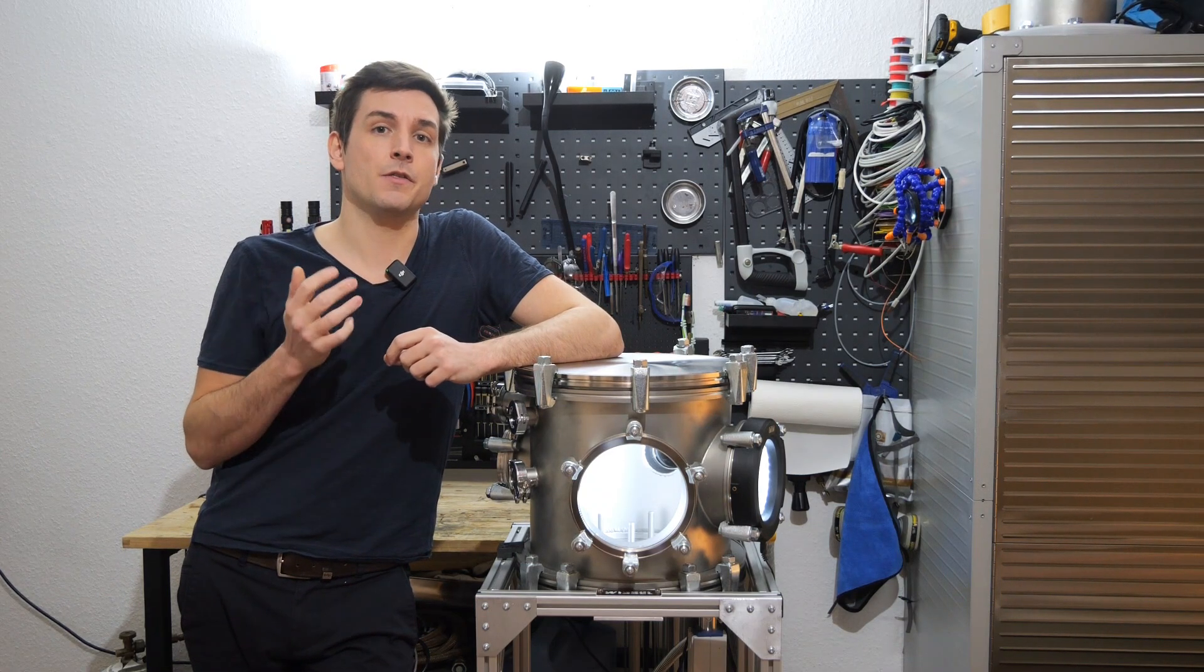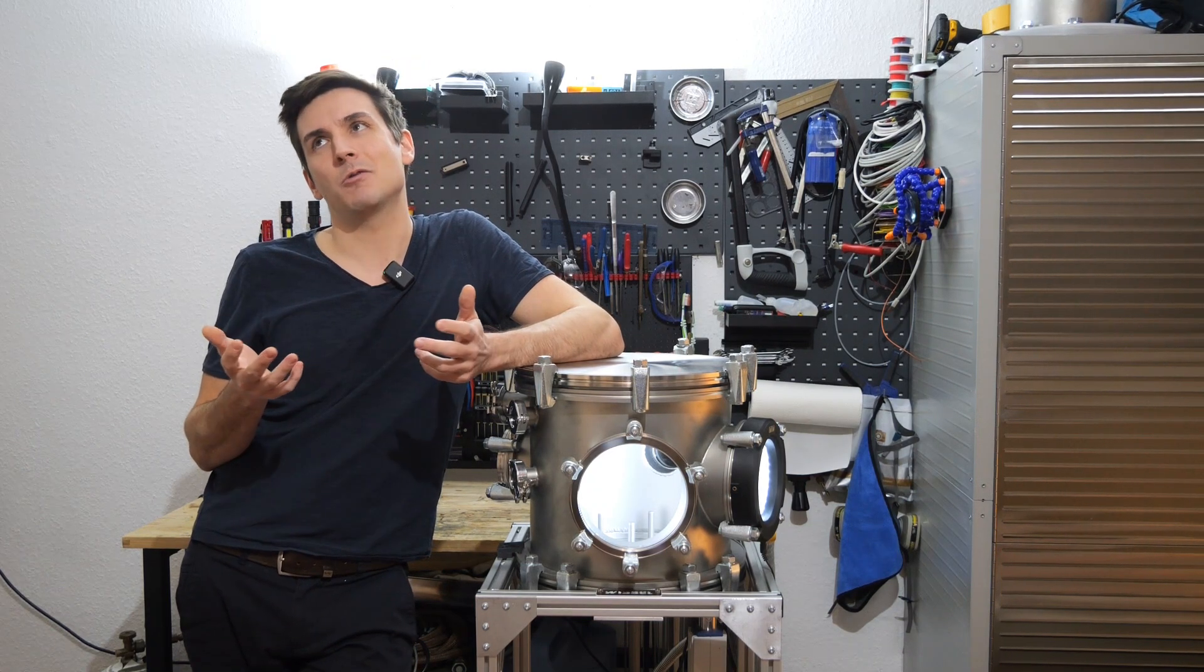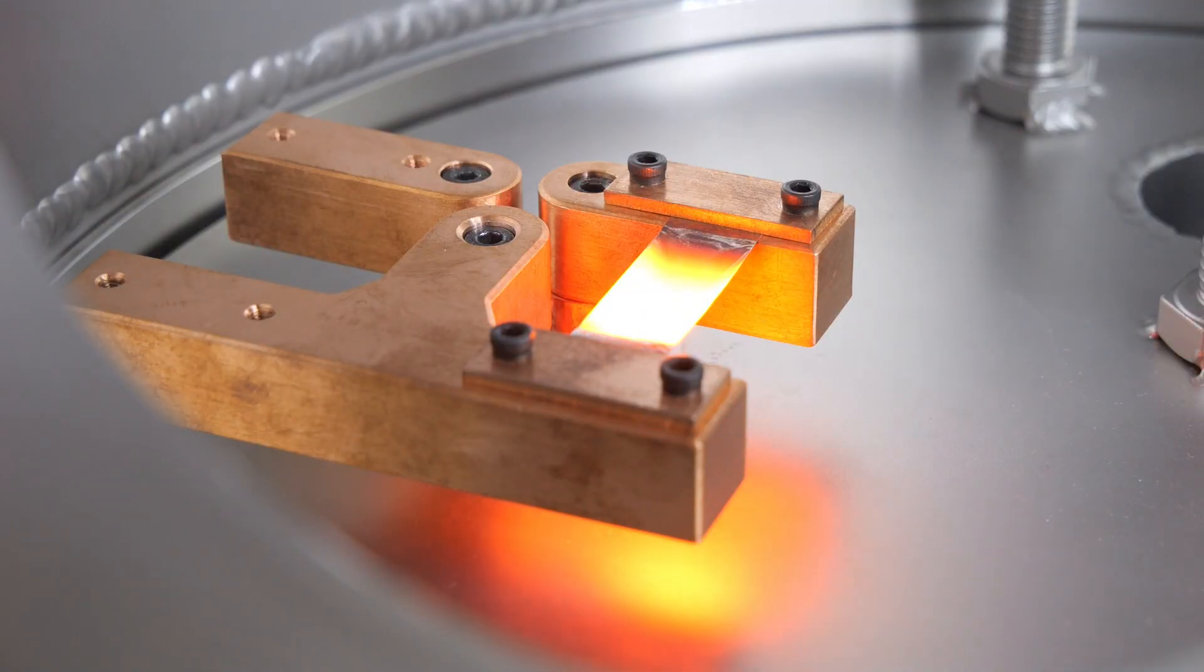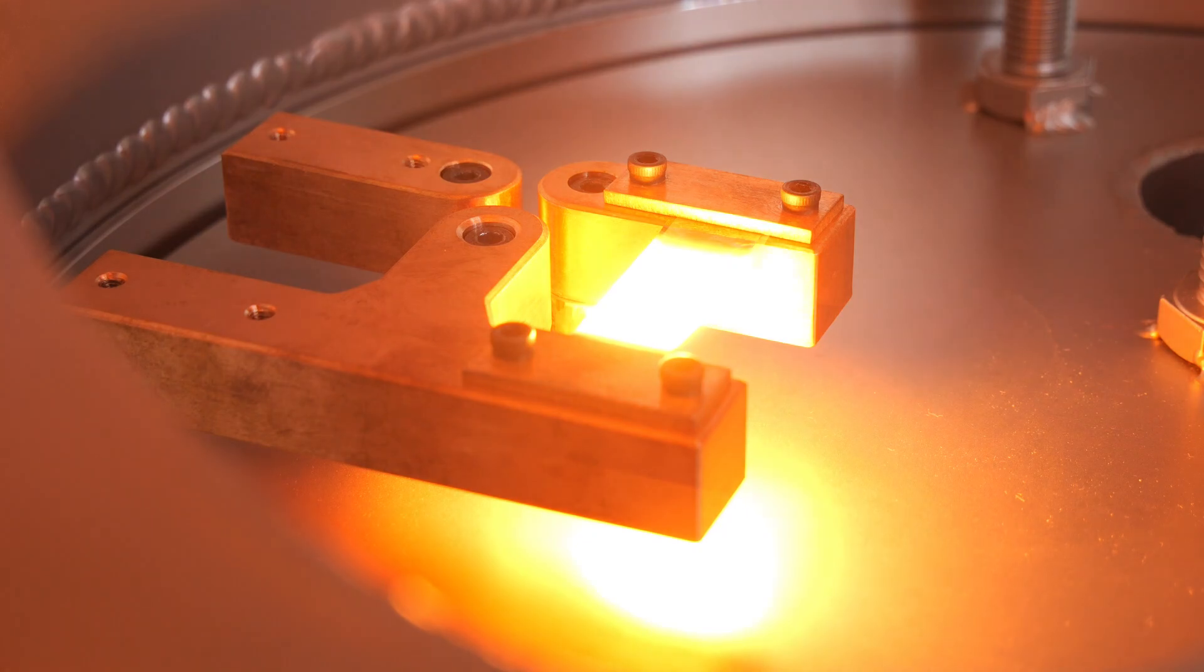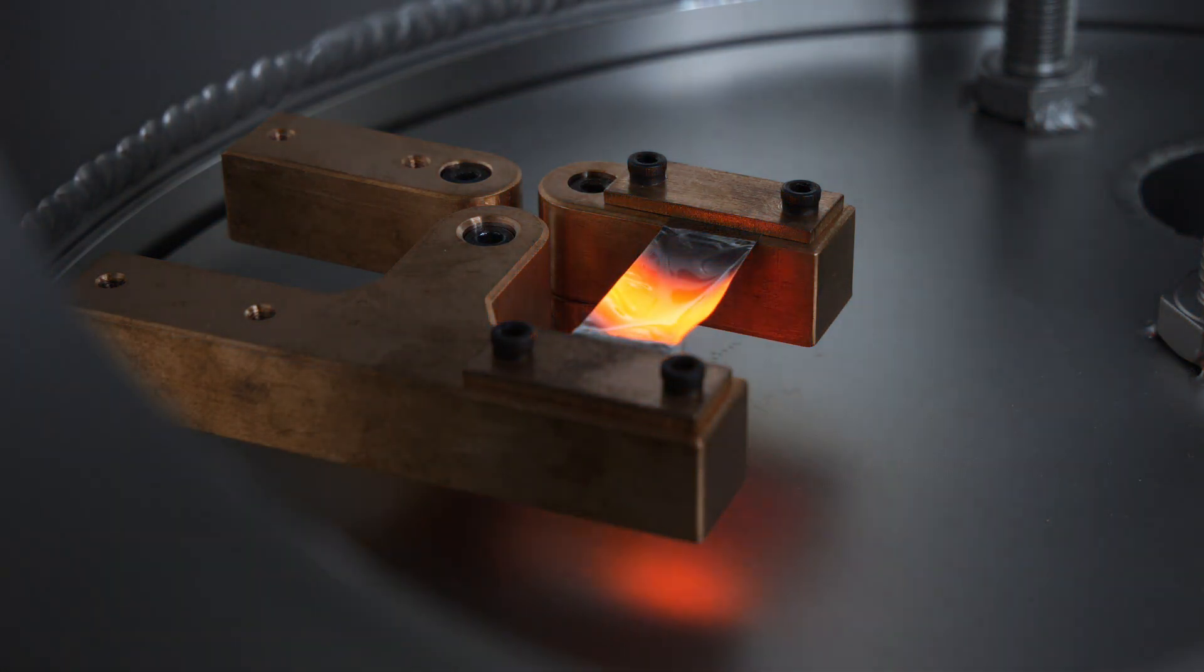But what I am going to use is thermal evaporation, which is I would say the easiest way. It just means that you heat the metal in the vacuum chamber until it evaporates or sublimates and then you can condense it onto your surface.